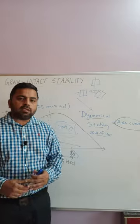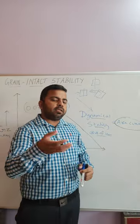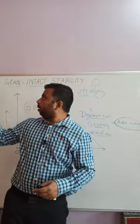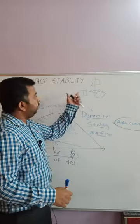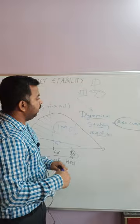So what is the importance of area under the curve? Why is IMO insisting the area under the curve to be not less than this? The same requirement is in intact stability grain criteria, which is our topic for the day.